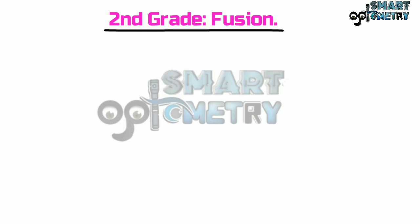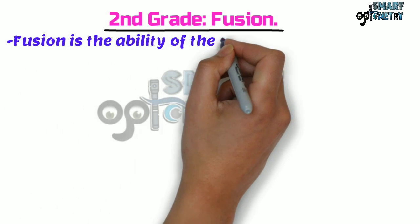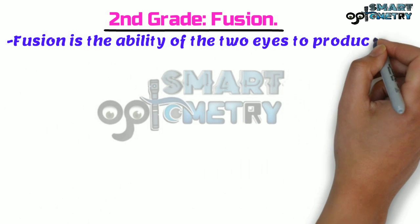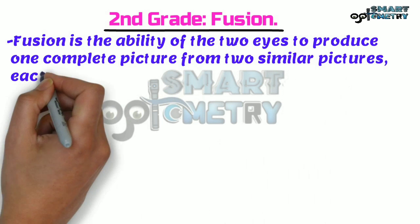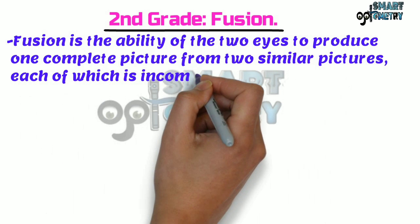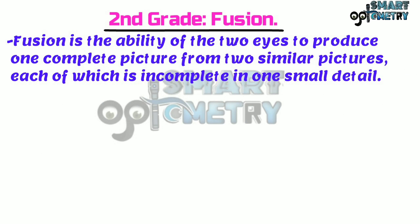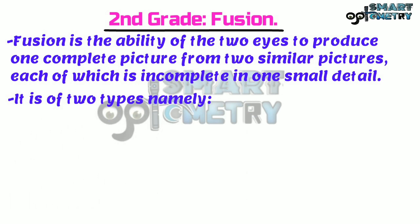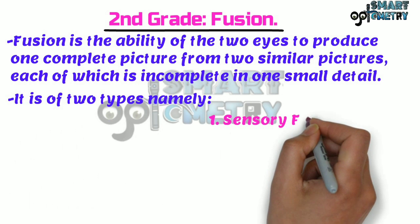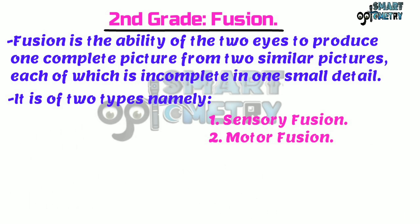Second grade: fusion. Fusion is the ability of two eyes to produce one complete picture from two similar pictures, each of which is incomplete in one small detail. It is of two types: sensory fusion and motor fusion.